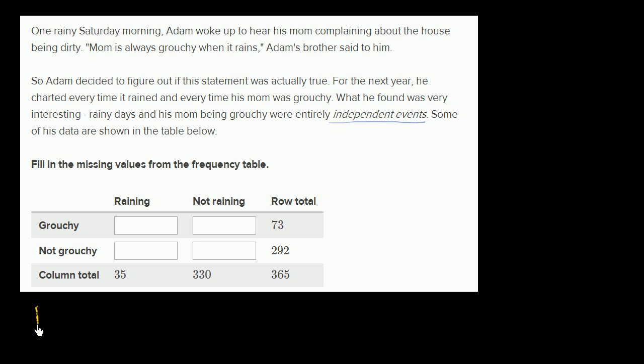That means that the probability of mom being grouchy given it is raining should just be the same thing as the probability of mom being grouchy in general.